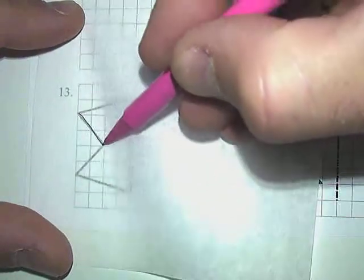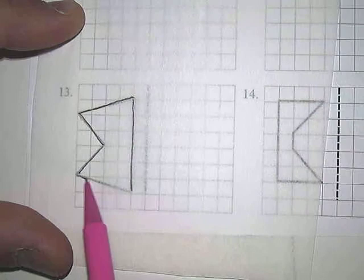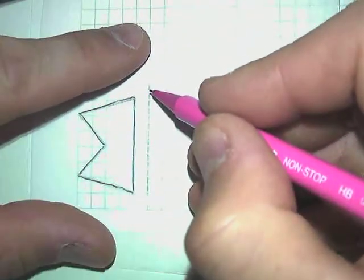Put the tracing paper over the shape. Trace the shape. Try and be as exact as you can. Hold the tracing paper down really tight to the page. Don't forget to trace your mirror line.